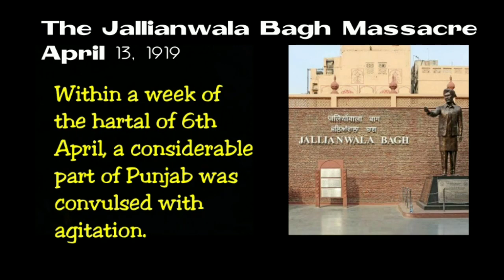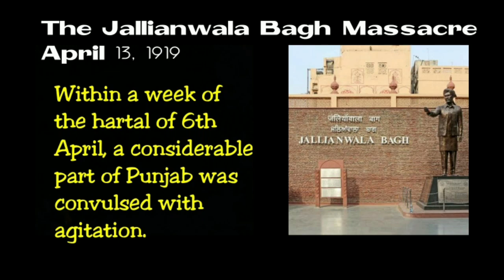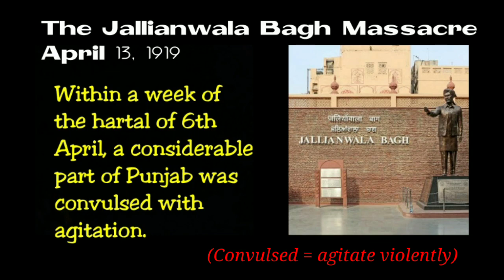The next topic is the Jallianwala Bagh Massacre, April 13, 1919. Massacre means carnage or mass killing. Within a week of the Hartal of 6th April, a considerable part of Punjab was convulsed with agitation. Convulsed means agitated violently.